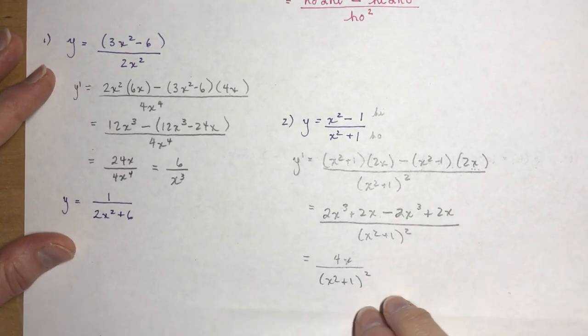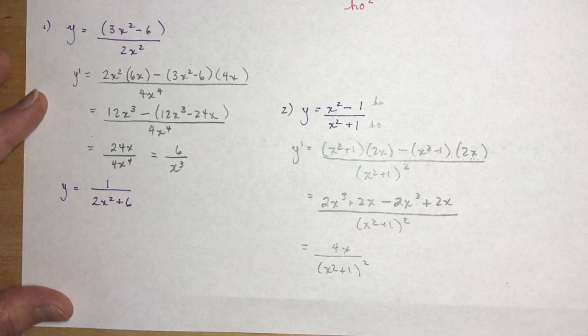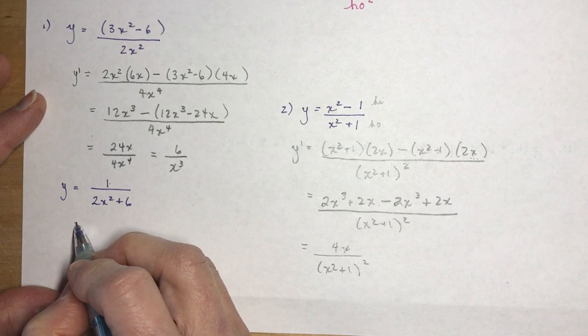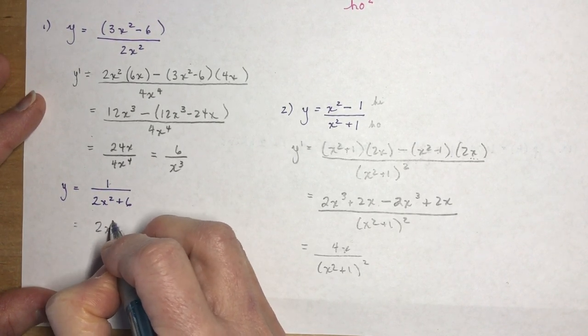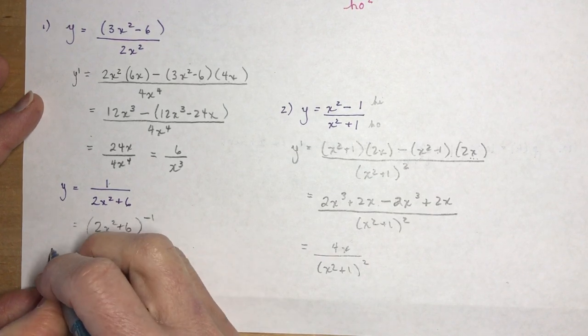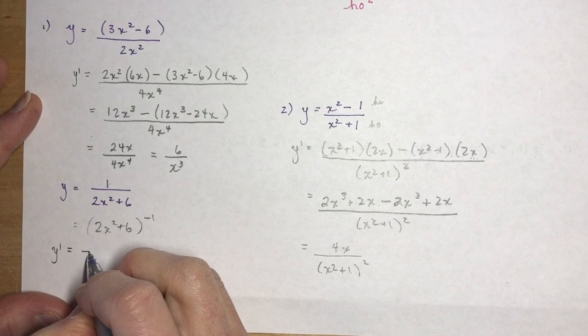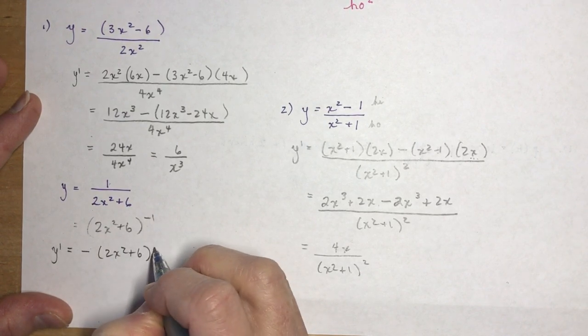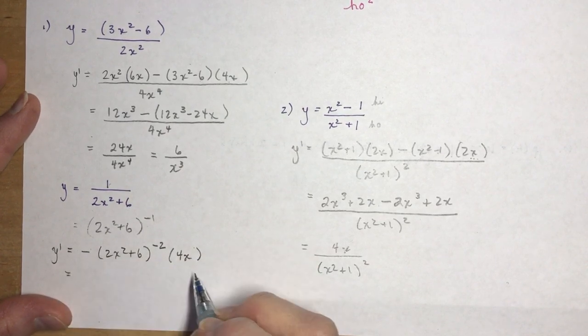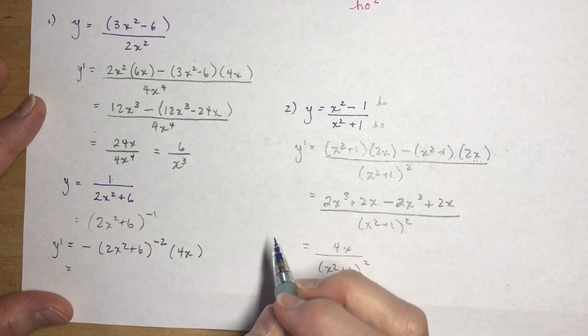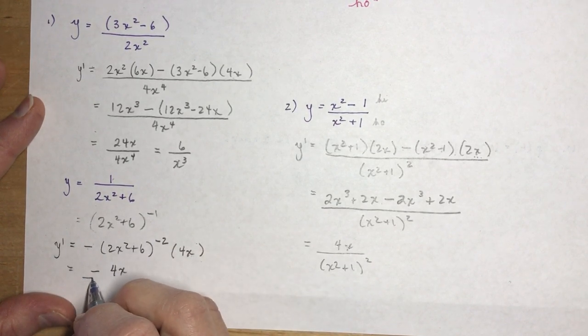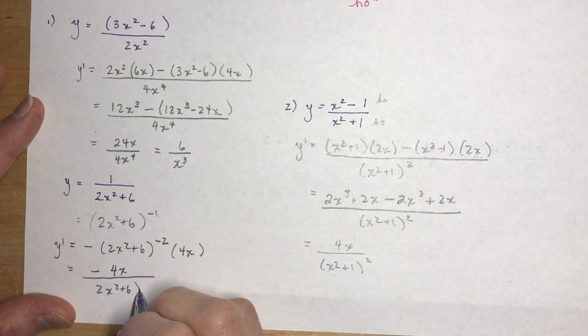The next example, 1 over 2x² + 6. You could do this as a quotient rule if you want, but I think it would be much easier if you brought the denominator and wrote it like (2x² + 6)⁻¹ before you start. Using chain rule: negative, then (2x² + 6)⁻² times the derivative of the inside. That gives me -4x is in the numerator, but all of this is in the denominator: (2x² + 6)².